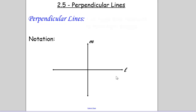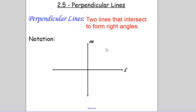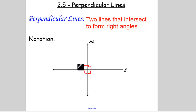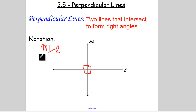Today we're going to be talking about perpendicular lines. Our definition of perpendicular lines is two lines that intersect to form right angles. So each one of these angles is a right angle. Remember, that little corner is our notation for right angles. How we write that two lines are perpendicular is M perpendicular to L.